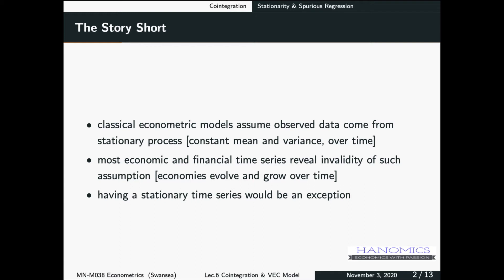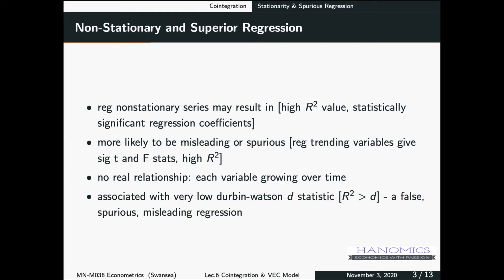So what is the problem if we have a regression of non-stationary data? We explained this before. We say we would have a high R-squared value. You would have statistically significant regression coefficients. But this is misleading because you could be regressing two variables that they are not related. But according to the regression results, they are related. And the only trick here, the only problem here is that because these two variables just move over time. So that's why you see a significant relationship. That's why you see this significant coefficient and high R-squared.